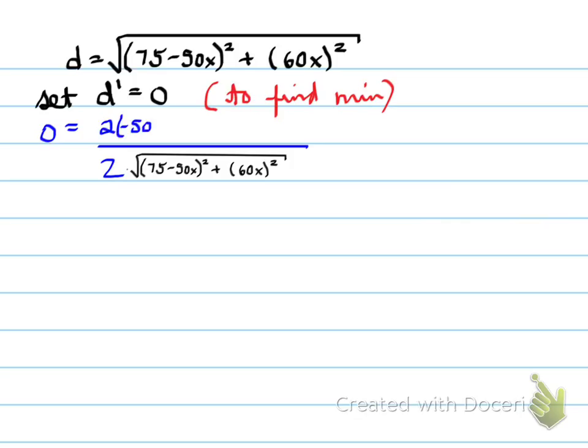And for the top, I have the derivative of the inside the root sign. So I'm taking the derivative of this part right here. The derivative of that is, bring the 2 down, 2 times negative 50, times 75 minus 50x to the power of 1, plus 2 times 60, which is 120, times 60x to the power of 1.